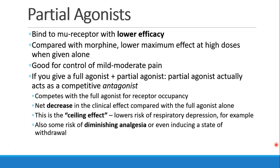These drugs are really good for controlling mild to moderate pain. If you give somebody a full agonist like morphine and a partial agonist, the partial agonist actually acts sort of like a competitive antagonist because it blocks the full agonist like morphine from reaching all of the receptors. It competes with the full agonist for receptor occupancy, and we have a net decrease in the clinical effect compared with giving the full agonist alone.